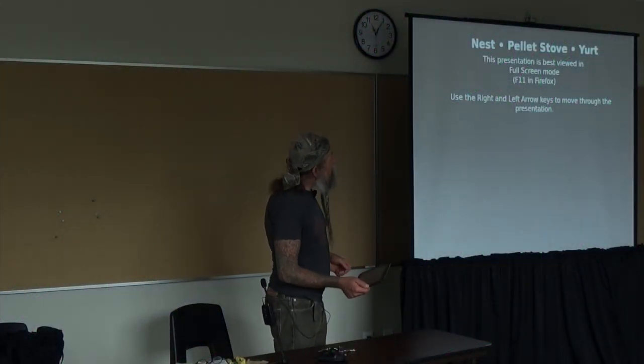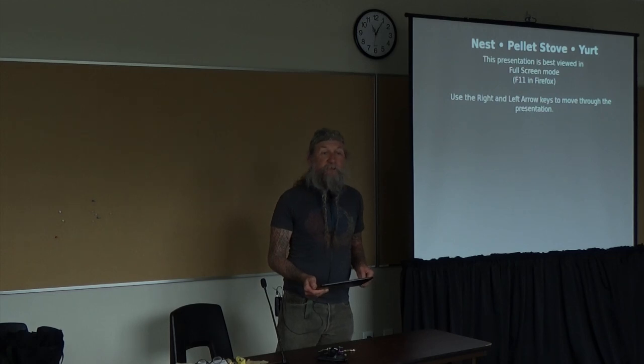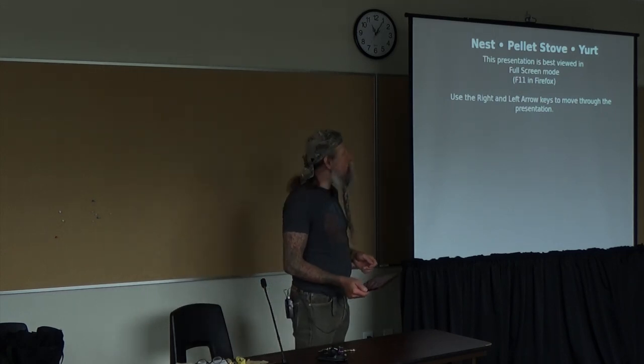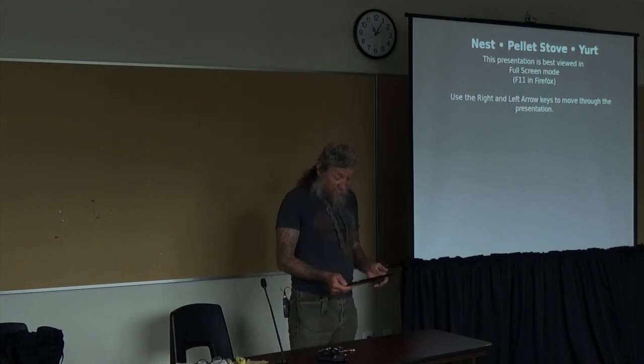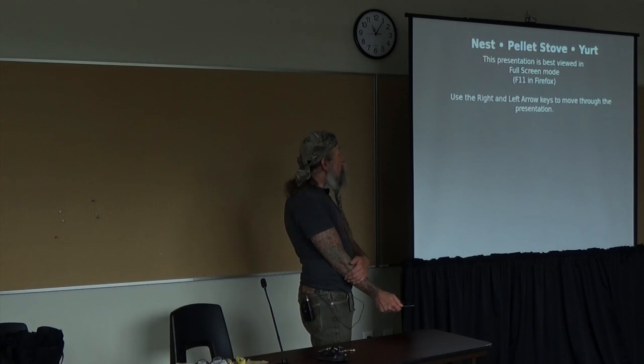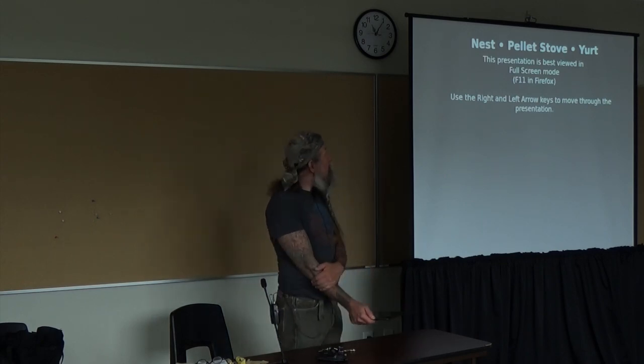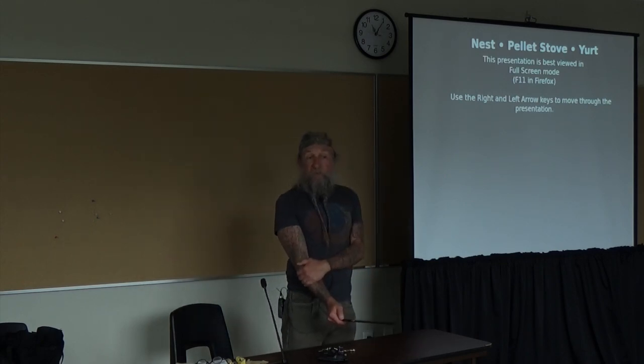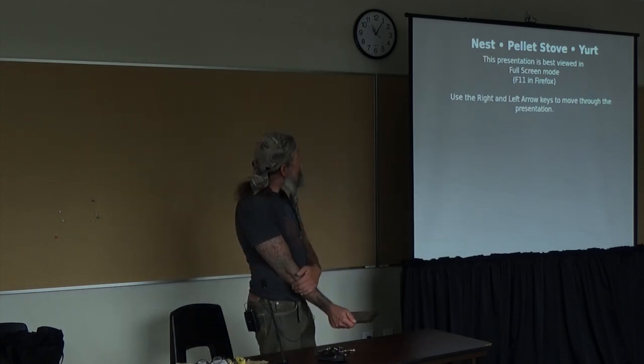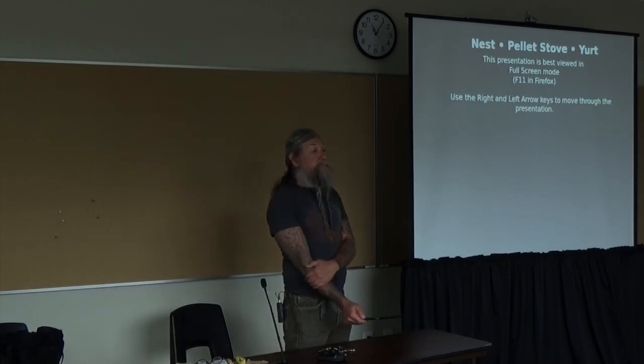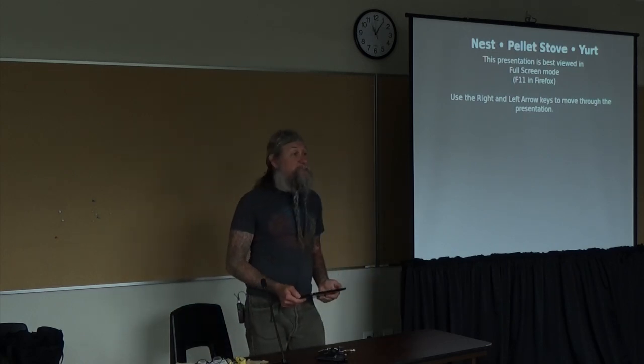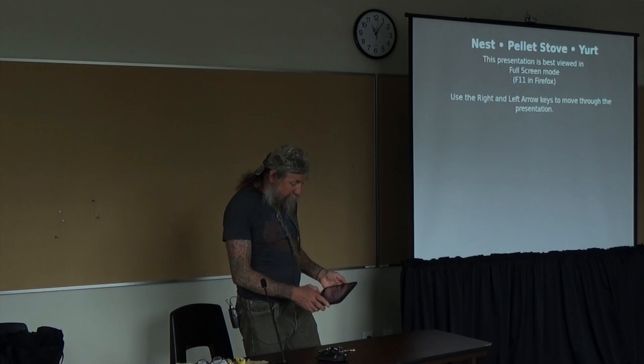Hello, I am going to talk today about making three technologies that were never intended to work together, to actually work together. The Nest thermostat is a modern version of technology from the 1800s. A pellet stove is a version of a campfire that doesn't burn the house down. It burns efficiently. And a yurt, or the modern version of a yurt, is just a tent built on an ancient Mongolian design.